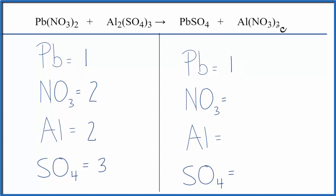On the product side, one lead, three times the one nitrate. We have three of those, one aluminum, and just one sulfate.